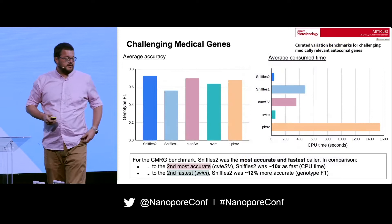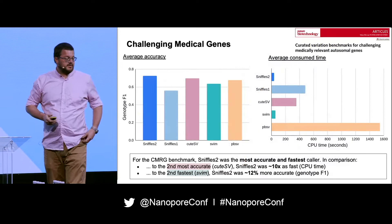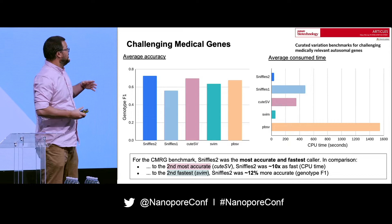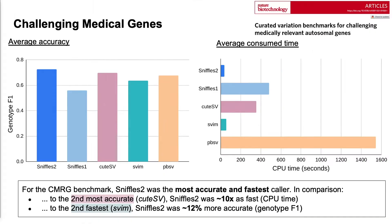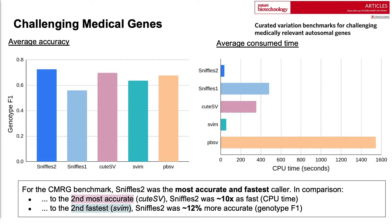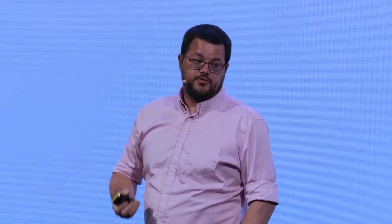We went further and assessed a benchmark published in February together with Genome in a Bottle, focusing on tricky medically relevant genes - a set of 400 genes encompassing 200 structural variants. Performance is a little bit lower, from over 90% down to around 75%. But Sniffles compared to the second most accurate method, PBSV, was around 10 times faster, and compared to the second fastest method, SVIM, was around 12% more accurate - really performing well.